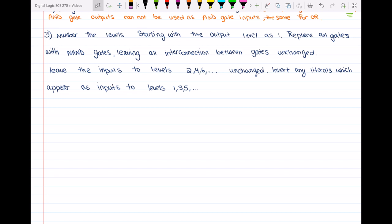So here is the function that I have: f is equal to a prime b prime plus c d plus a prime f prime g prime. And this is OR with h i prime j plus k.